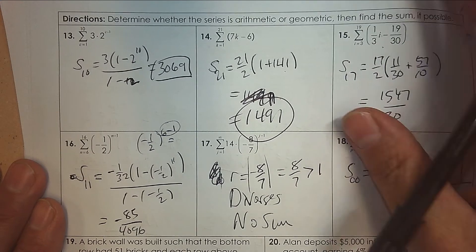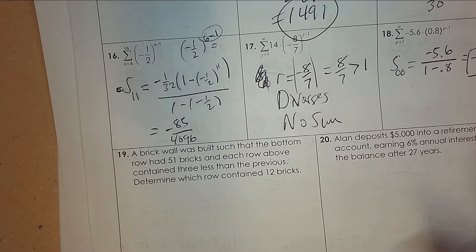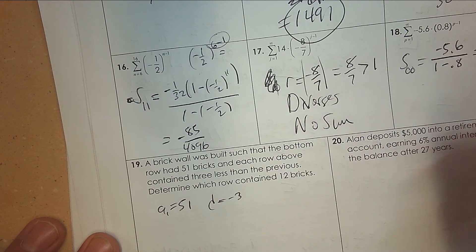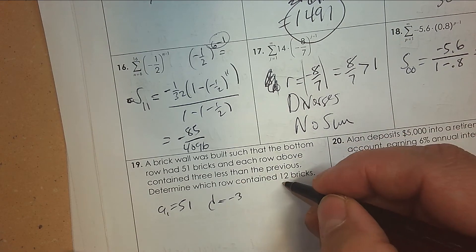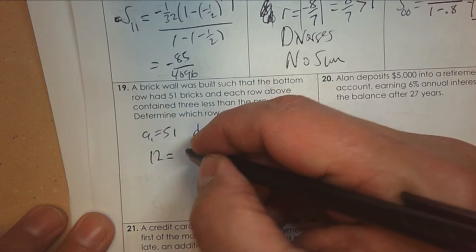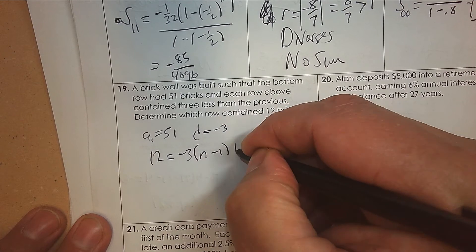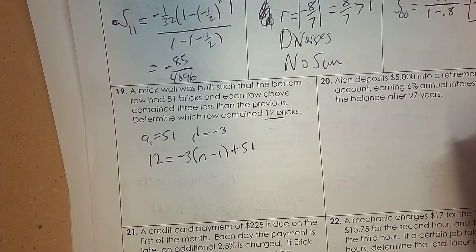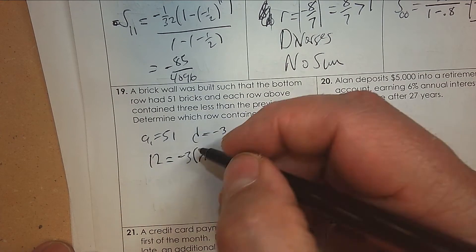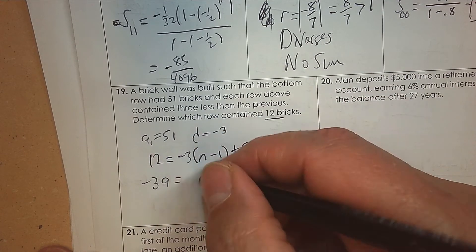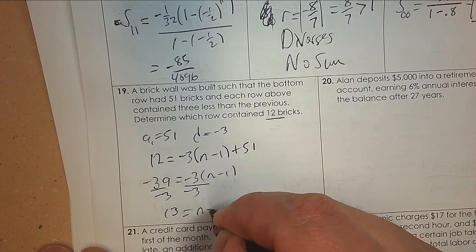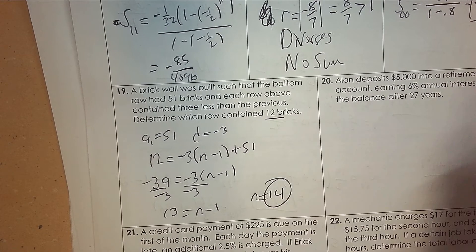A brick wall was built such that the bottom row had fifty-one bricks, and each row above contained three less than the previous term. Which row contains twelve bricks? Set up: twelve equals negative three times n minus one, plus fifty-one. Subtract fifty-one: twelve minus fifty-one is negative thirty-nine. Divide by negative three, that's thirteen. Add one — which row has that many bricks? The answer is fourteen.